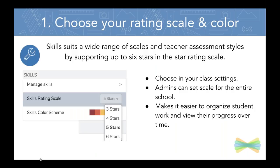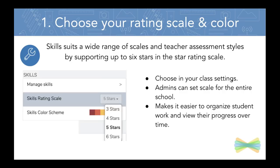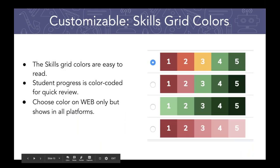Tip number one: you can choose your rating scale and color. When students are adding work to Seesaw, you can tag it with skills and determine what that rating scale is for whatever system works best in your classroom. Skills support a wide range of scales and teacher assessment styles. We support up to six stars for the rating scale, so you can choose three, four, five, or six. These are available in your class settings. And if you're using Seesaw for Schools, your admin can set the scale for the entire school.